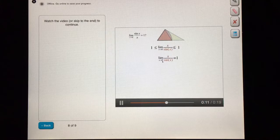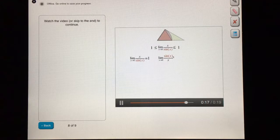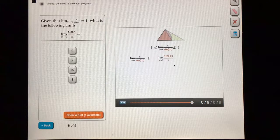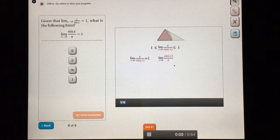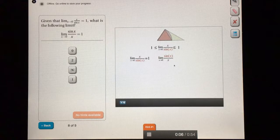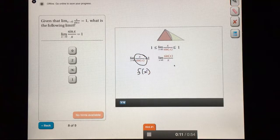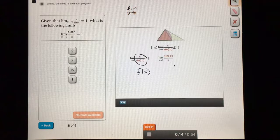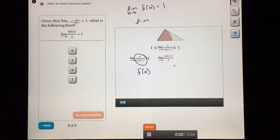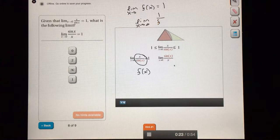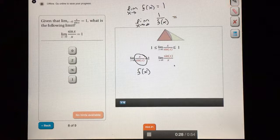If the limit as x goes to zero of x over sin x is one, then what's the limit as x goes to zero of sin x over x? It seems like the limit of the reciprocal should be the reciprocal of the limits, but let's check it carefully using the quotient rule. Let's call x over sin of x f of x. So we know that the limit as x approaches zero of f of x is one. Then what's the limit as x approaches zero of one over f of x? That would be x over sin x. Well, we can use the quotient rule.